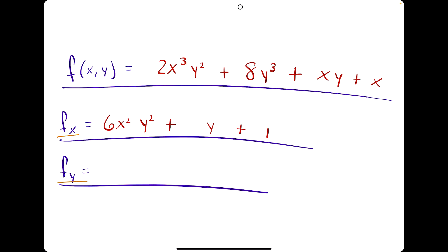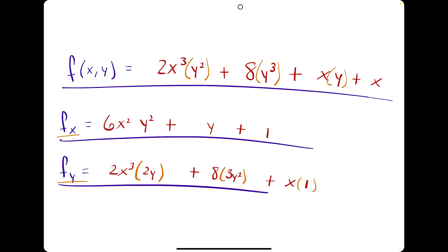Now let's find fy, the partial derivative with respect to y. Identifying all y terms: y squared, 8y cubed, and y. The derivative of y squared is 2y, and the x cubed in front is a constant that stays attached, giving 2x cubed times 2y. The derivative of y cubed is 3y squared, keeping the 8 as a coefficient: 8 times 3y squared. The derivative of y is 1 and x stays attached, giving x times 1. Simplifying: 4x cubed y plus 24y squared plus x.